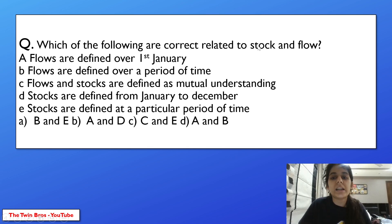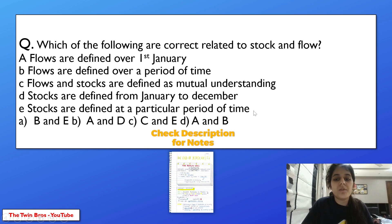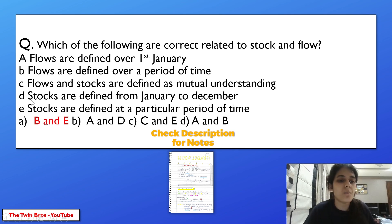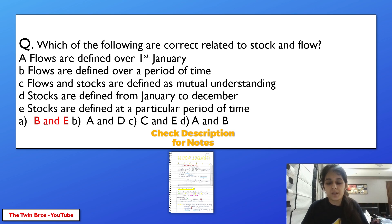Which of the following is correct regarding stock and flow? Flows are defined over a period of time; stocks are defined at a particular point of time. The answer is option B — flow variables are measured over a period of time, and stock variables are measured at a particular point of time.